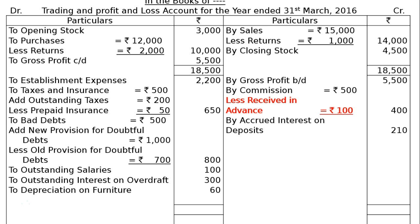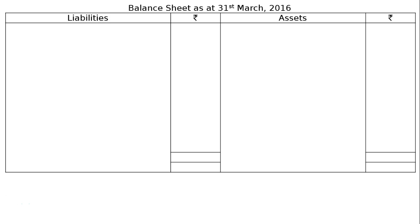Total the credit side of the Profit and Loss Account, which comes to Rs 6,000. Write it on the debit side and find out the difference — that is net profit carried down Rs 2,000. Add this profit to the capital account on the liabilities side of the balance sheet as at 31st March 2016.